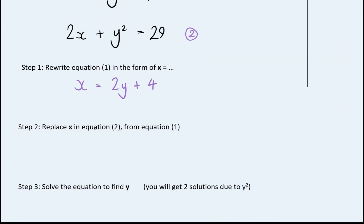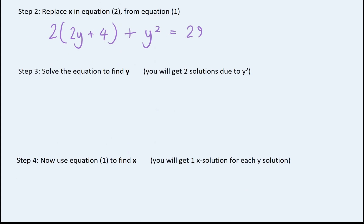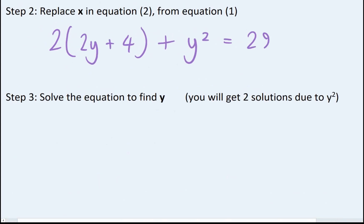Next we need to replace x in equation two with what we've just worked out, x equals. So we've got two lots of x, so this is going to be two lots of 2y plus 4 plus y squared equals 29. And now we need to solve this. So first thing I have to do is I've got to expand this bracket out. So that is going to give me 4y plus 8 plus y squared equals 29.